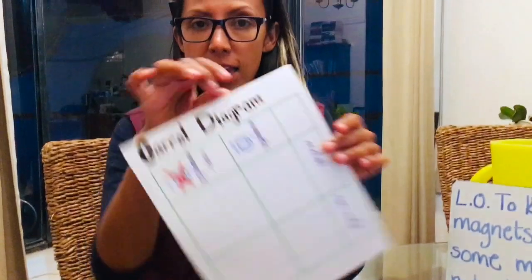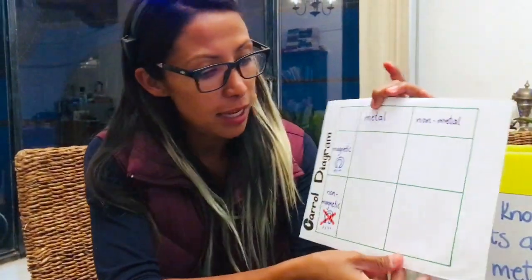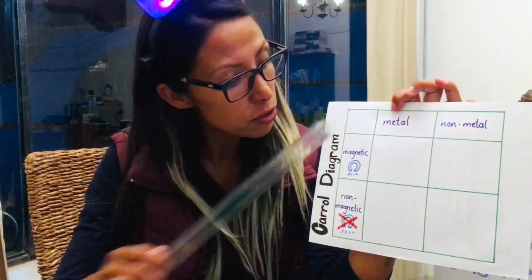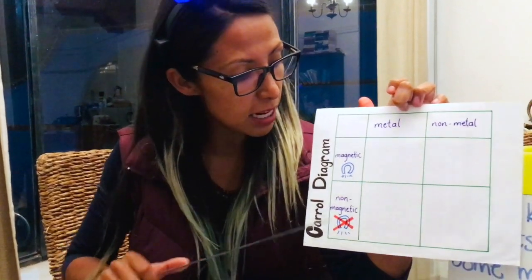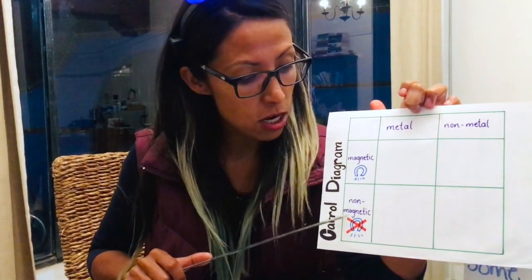We're going to find that out through a Carroll diagram. It sounds super tricky but it is not. I drew this Carroll diagram with my ruler — I drew nine squares. On the left side I wrote 'magnetic' and 'non-magnetic', and here I wrote 'metal', in case my object is a metal, and 'non-metal'.